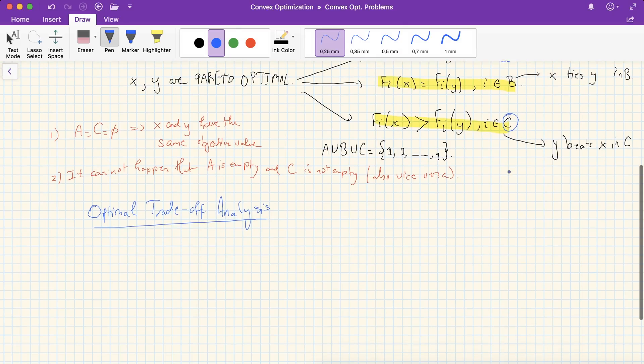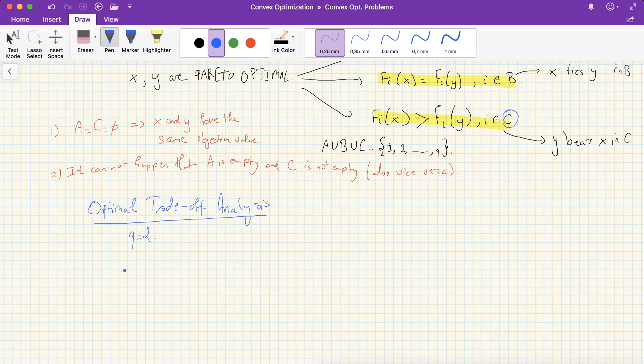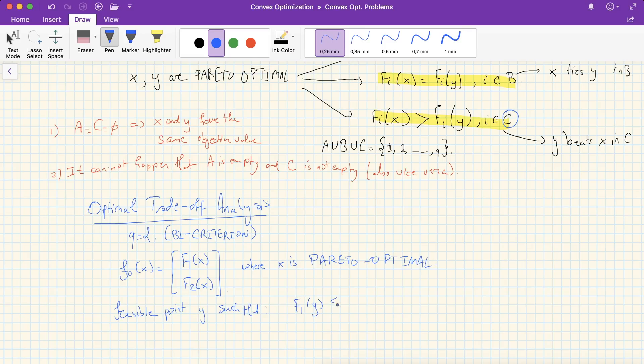So as an example, imagine my Q is 2, so I've got a bi-criterion problem, since I have two costs I'm looking at, that is f1 of x and f2 of x. And suppose that my x is Pareto optimal. So imagine that I have a feasible point y, such that f1 of y is less than or equal to f1 of x minus A, where A is positive, strictly positive,